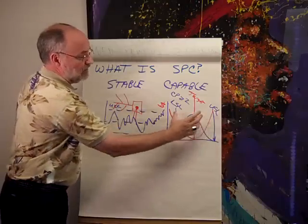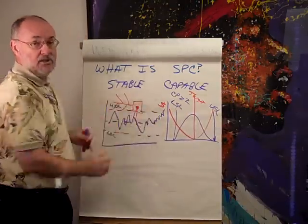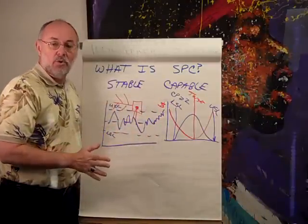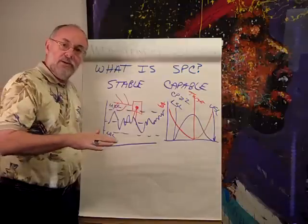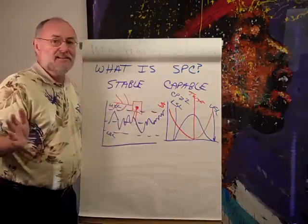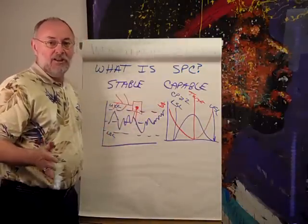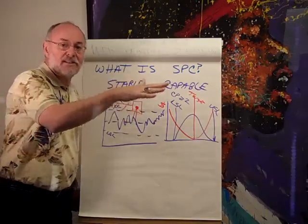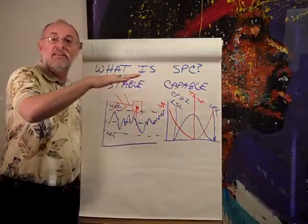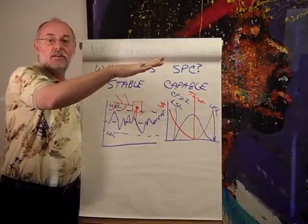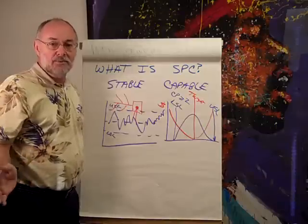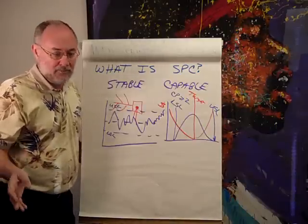Or if we need to reduce our variation, those are all things we can do with statistical process control. Once you get above a three sigma level, you really can't detect changes without these tools. So when you get to four sigma, five sigma, six sigma, you are going to have to have this in place to sustain that new level of performance. Otherwise, you'll just drift back into being a normal three sigma company with lots of mistakes, rework, and problems.